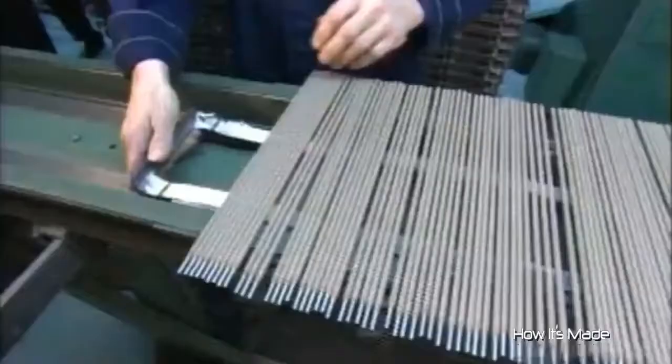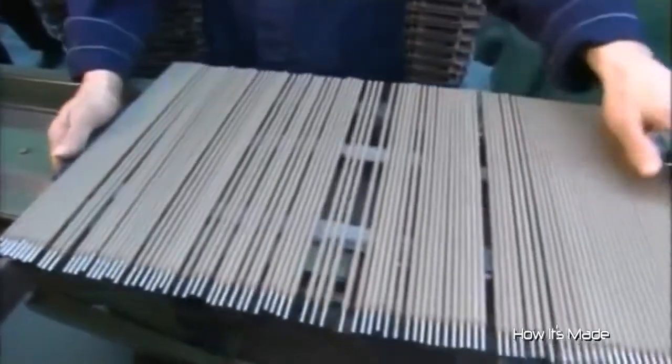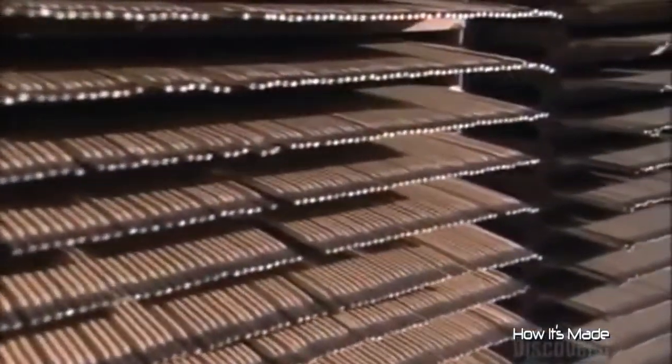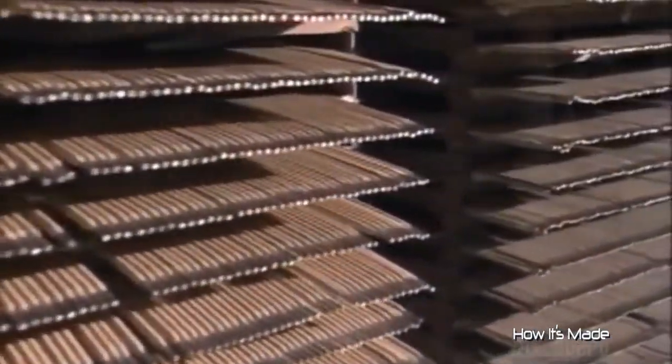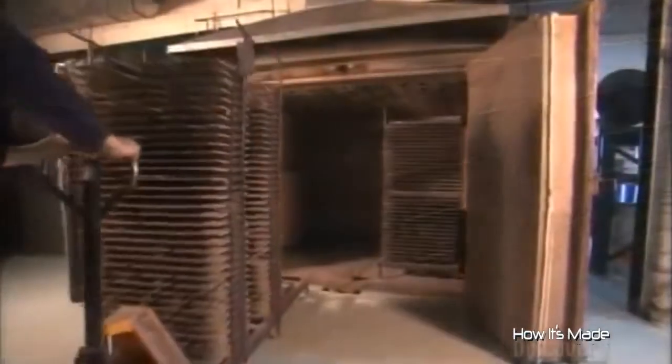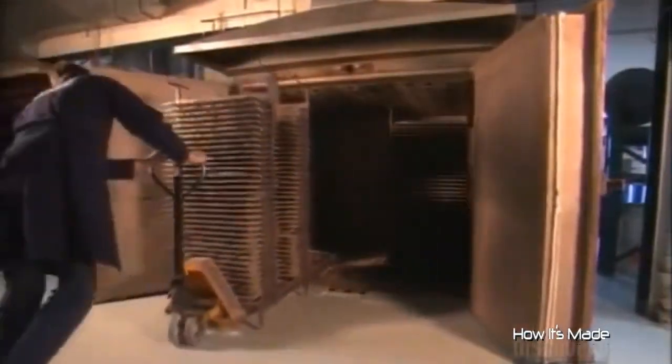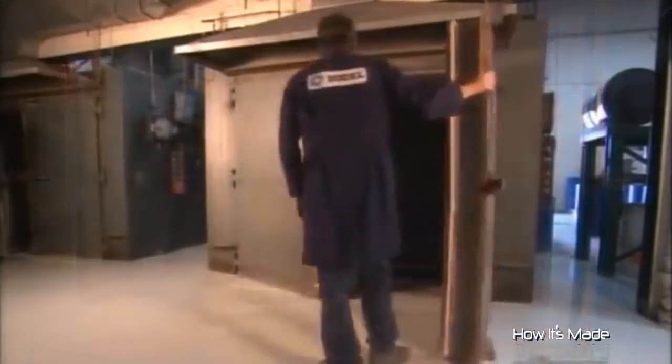A worker now checks for uneven coating and to see if the wire is well centered. The coating dries at room temperature for up to 72 hours. To cure the coating, workers put the electrodes in an oven heated to 485 degrees Celsius for up to five hours.